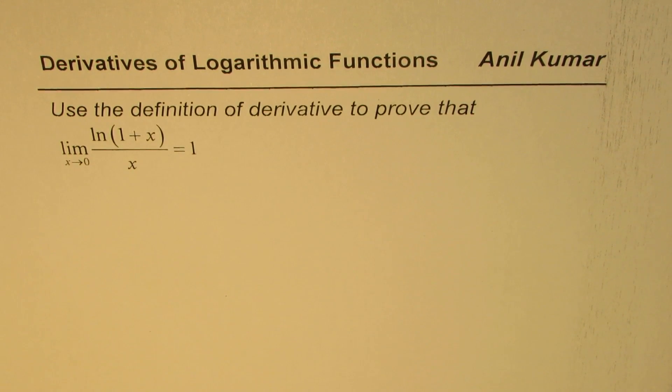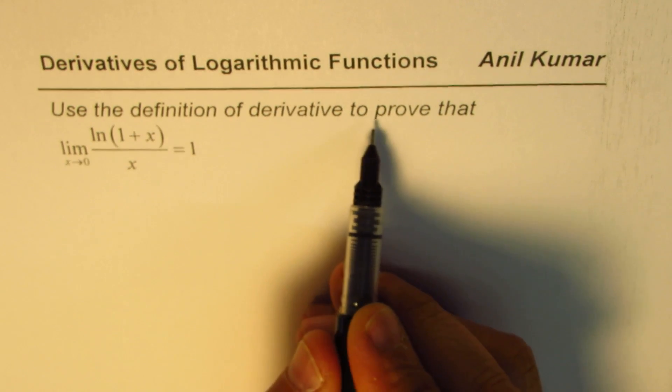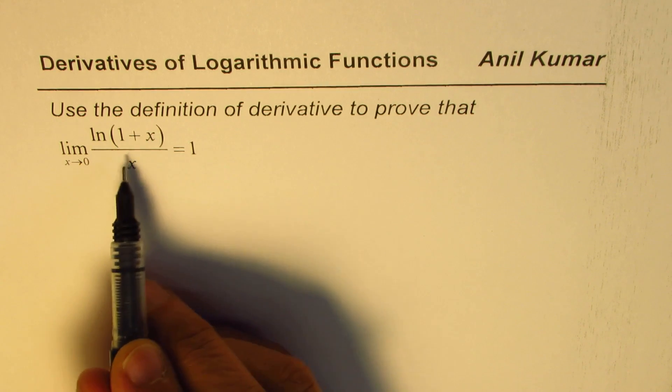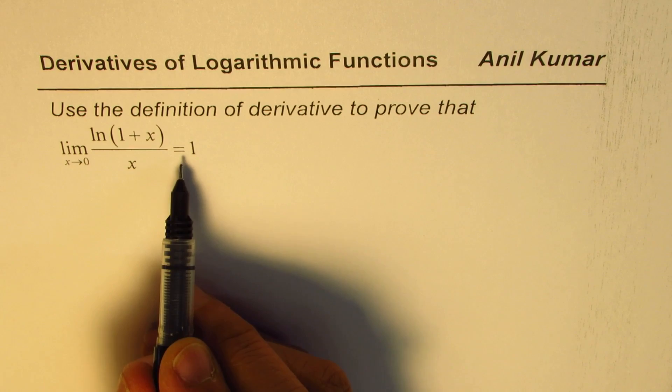I'm Anil Kumar sharing with you a thinking question on derivatives of logarithmic functions. The question here is, use the definition of derivative to prove that limit x approaches 0 for ln(1+x) over x equals 1.